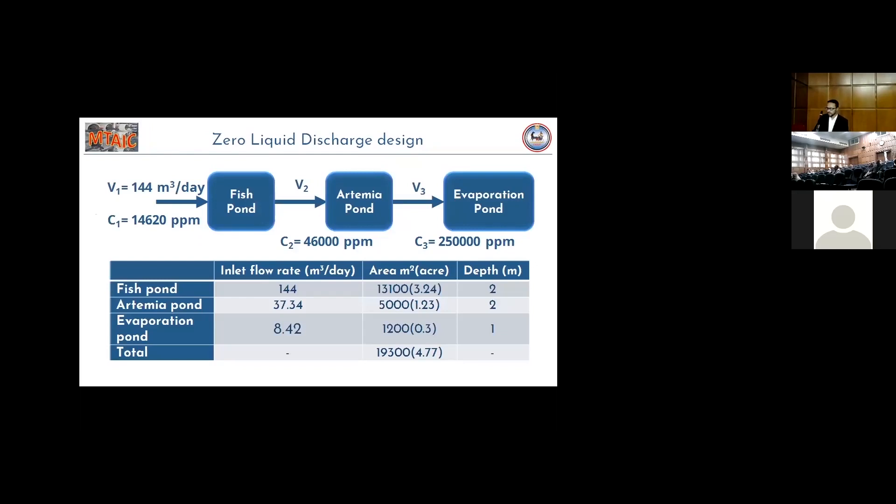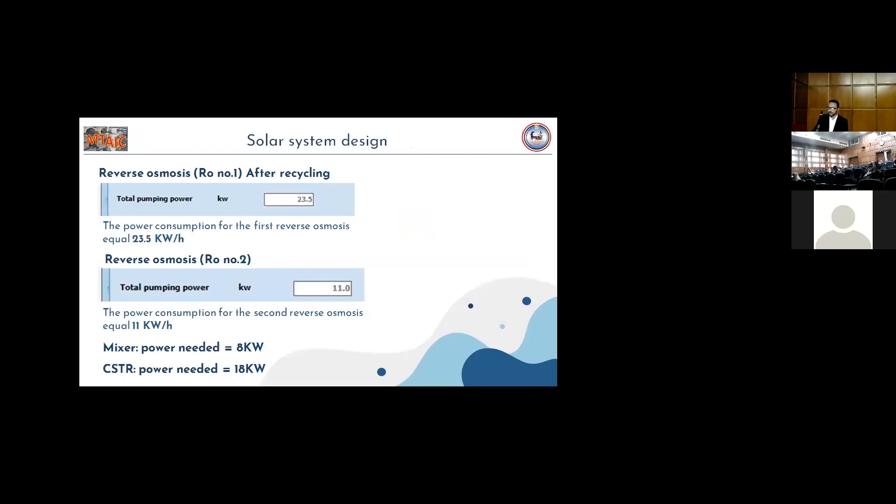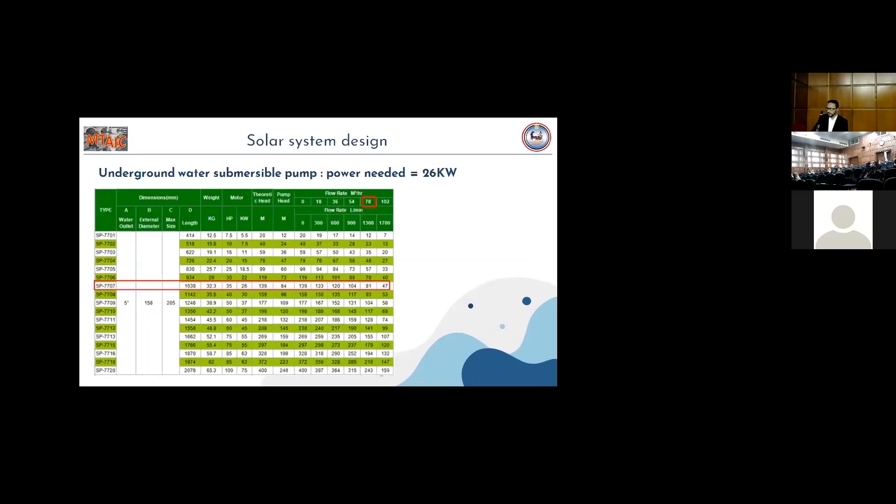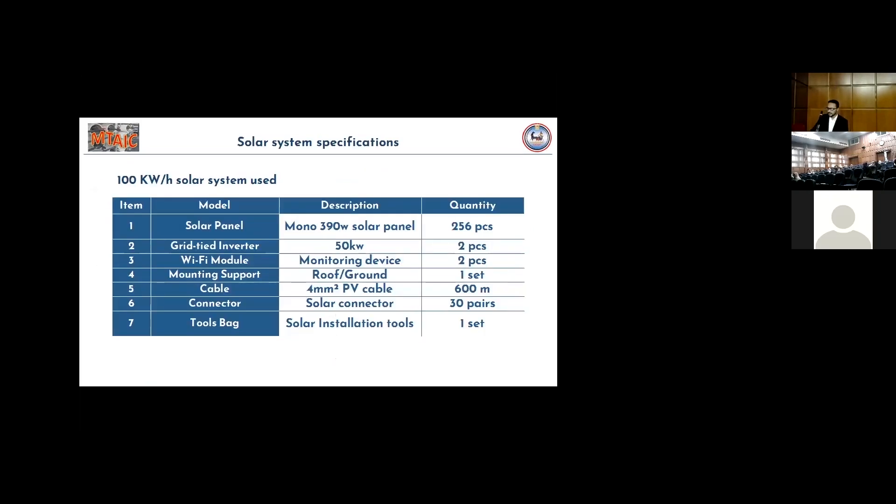The zero liquid discharge design includes three parts. First, the fish pond that can handle up to 46,000 ppm. And then, Artemia pond that can handle higher TDS range and evaporation room. As the design is based on the evaporation rate in Egypt, the area needed for the whole system is 4.77 hectares. The solar system is designed to provide the power required in RO pump and in the stirring part in the mixer and the stirring tank and the underground pump and backwash pumps. A 100 kW solar system is designed with its specifications.